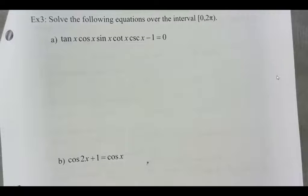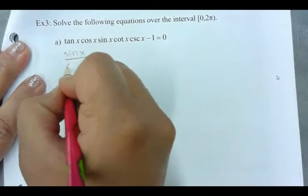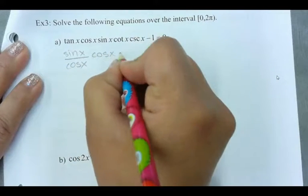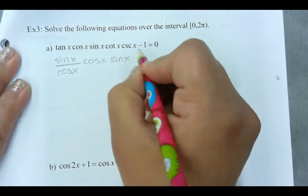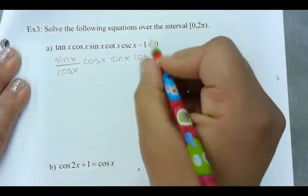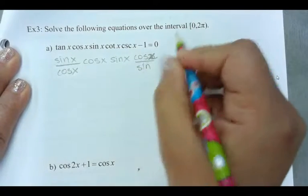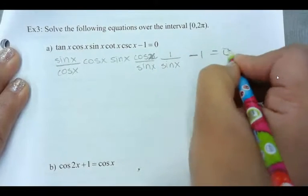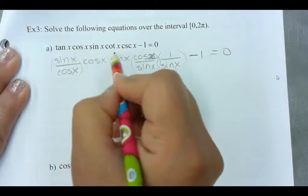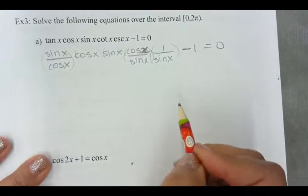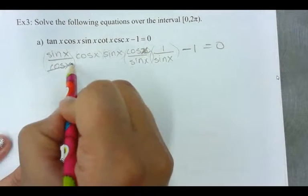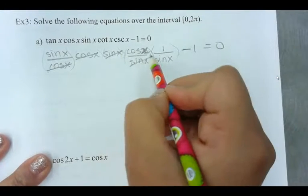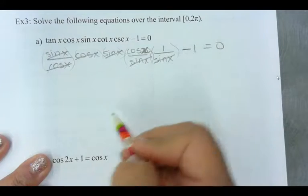Let's make everything into sine and cosines and then see if there's anything that we can reduce. Sine x over cos x, cos x, sine x, cotangent x is 1 over tan, so that's going to be cos x over sine x and then 1 over sine x is cosecant and then minus 1, that equals 0. Everything's being multiplied with each other, so let's start reducing. Cos is reduced to 1, sine's reduced to 1, this sine reduces to 1, and what are we left with?